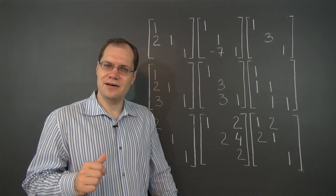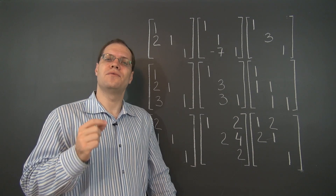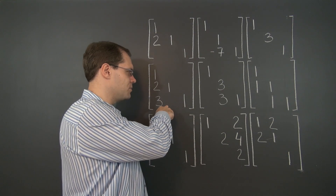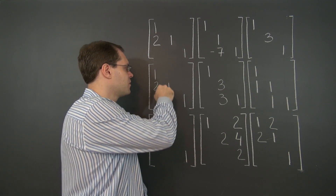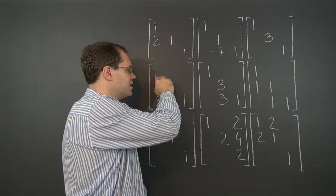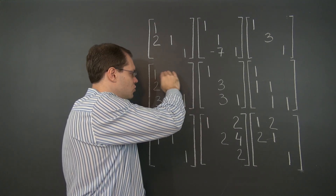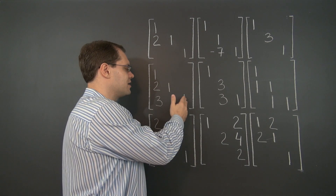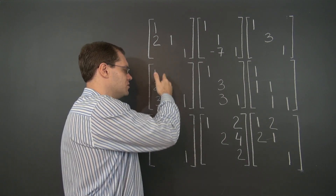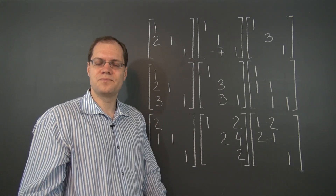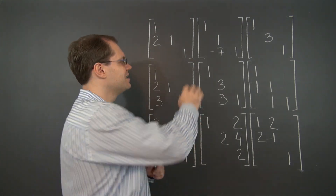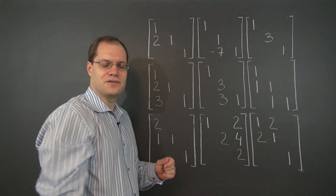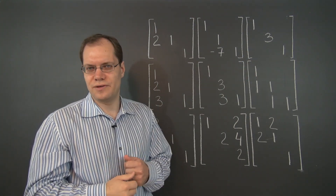Do you see how it's very different when you look at this from the point of view of columns compared to rows? When looking at this matrix from the rows perspective, row one was used in both operations. But from the columns perspective, we used column two and then column three. So the column and row perspectives seem related here but very different — and that's more the rule than the exception.